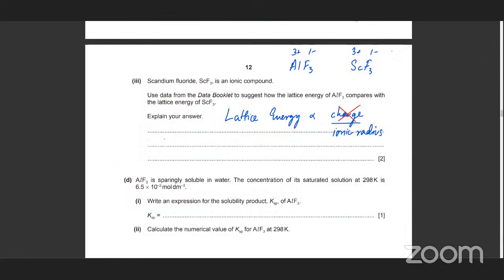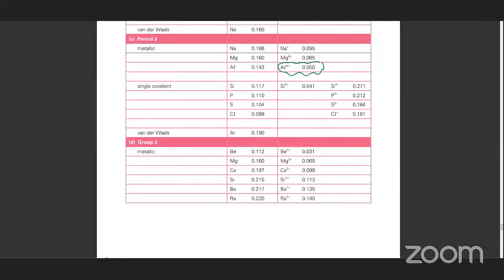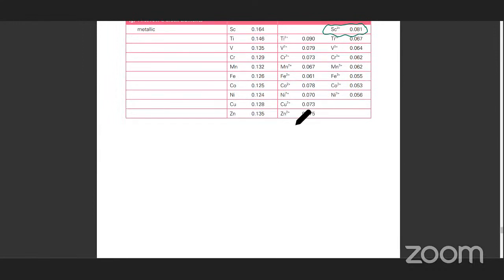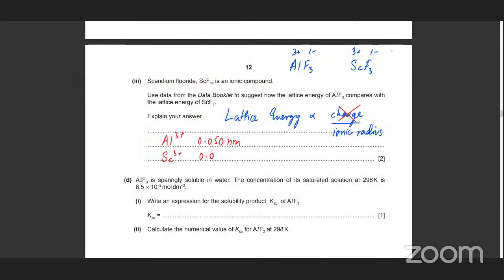So you've got both values here, and you've got to state that aluminium has an ionic radius of 0.050 nm and scandium 3+ is 0.081 nm. Then you'll know that this has a smaller ionic radius, so it's going to make a stronger lattice. You're going to mention charge density — a smaller ionic radius means a stronger lattice and it's going to be more exothermic.